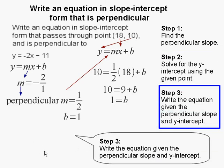Step 3: Write the equation given the perpendicular slope, which is 1/2, and the y-intercept, which is b = 1. I simply substitute those values into my slope-intercept equation, and my resulting equation is y = (1/2)x + 1. This completes my problem.